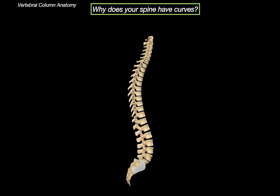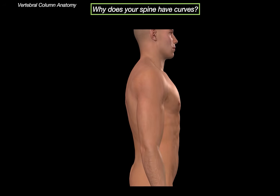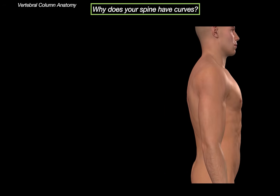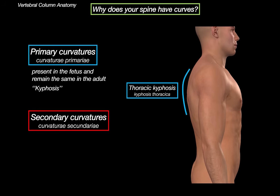Let's analyze the spine a little bit more. This is really important — why does your spine have curves? In an upright position, we humans have physiological curvatures, and we divide them into primary curvatures and secondary curvatures. Primary curvatures are present in the fetus and remain the same in adults. We call this type of curvature kyphosis — outward curvatures, which is normal to a certain degree, but can be abnormal if exaggerated. These are the thoracic kyphosis and sacral kyphosis.